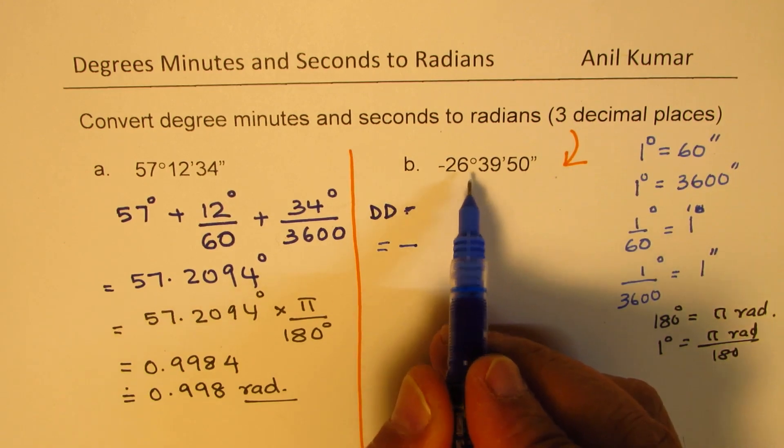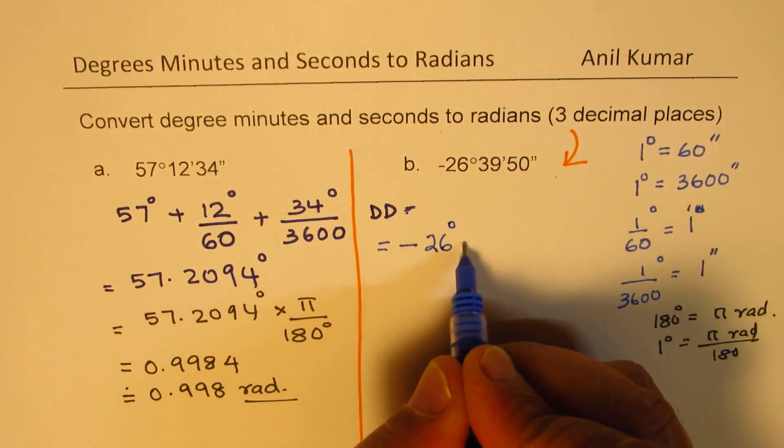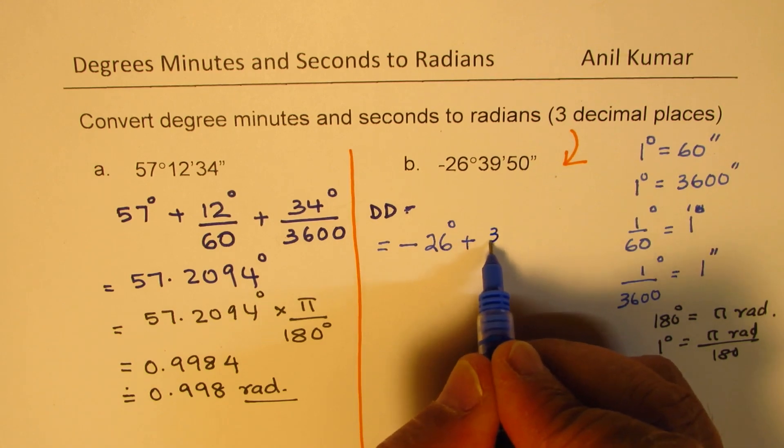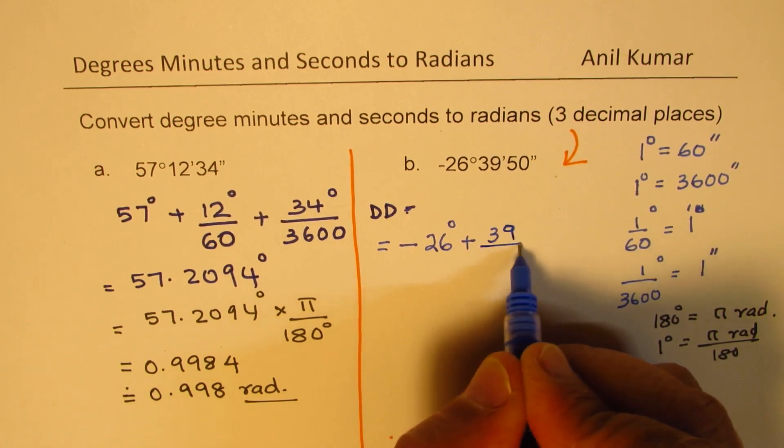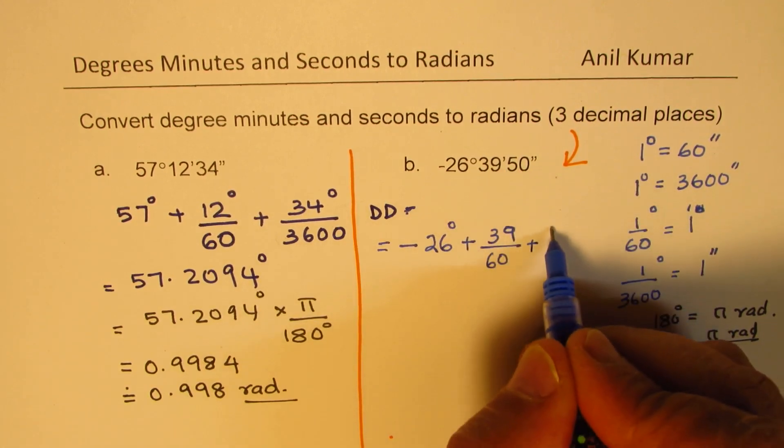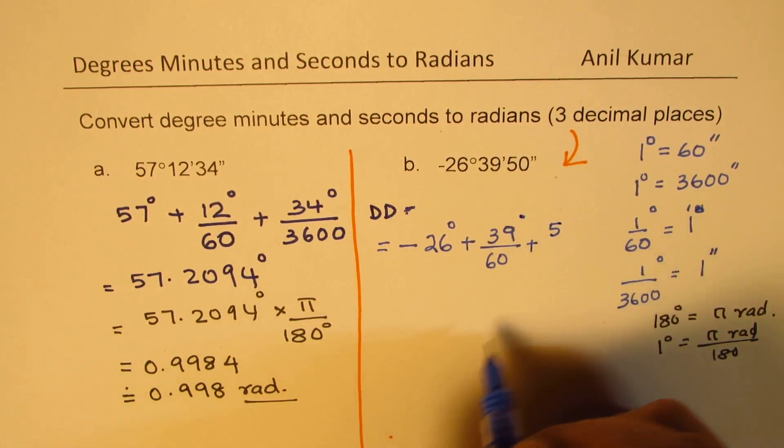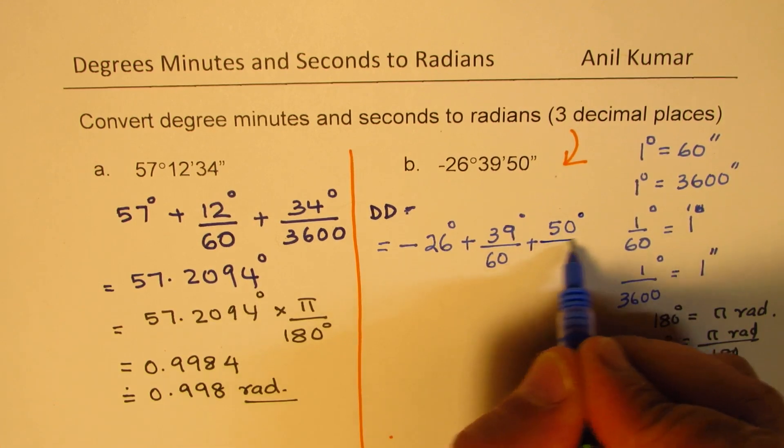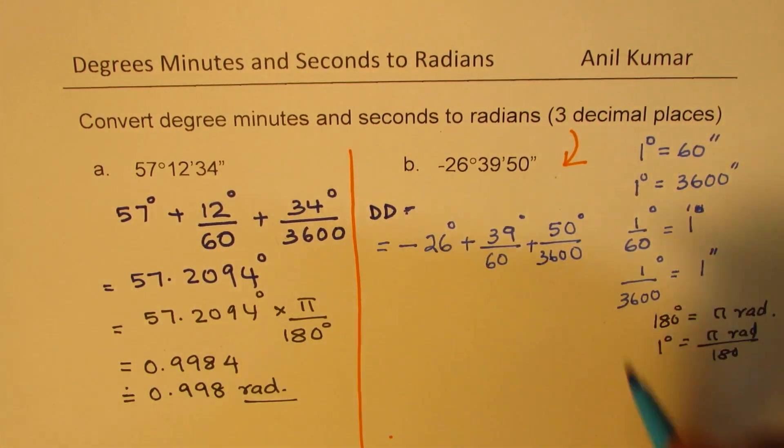So the first step here will of course be writing this as negative. We have 26 degrees. So 26 degrees is perfectly fine. Then 39 minutes, writing it in degrees, we have to divide by 60, plus 50 seconds. So that now becomes degrees. 50 seconds will become degree if I divide by 3600.